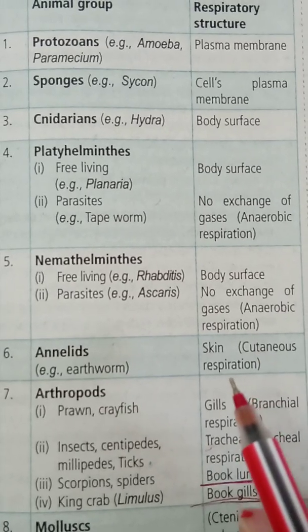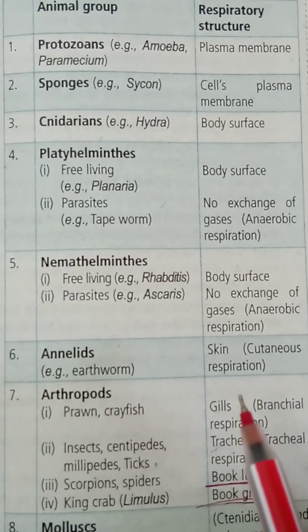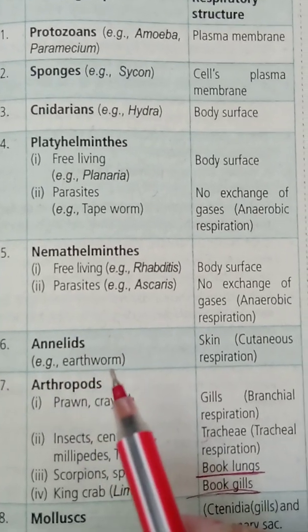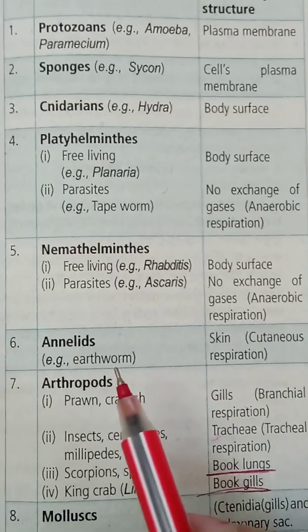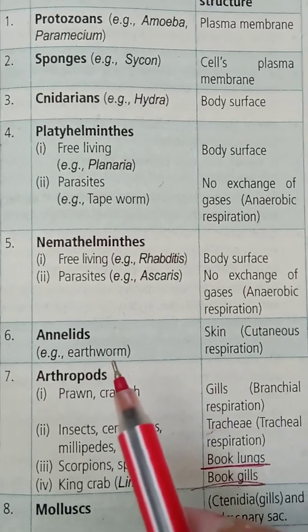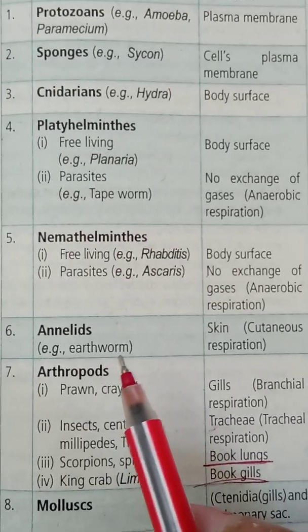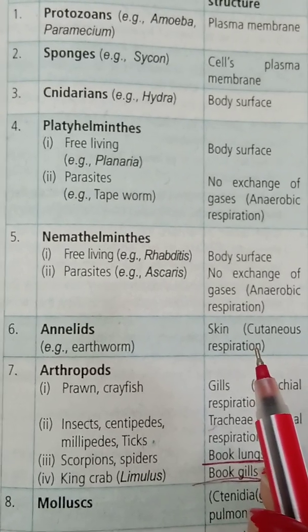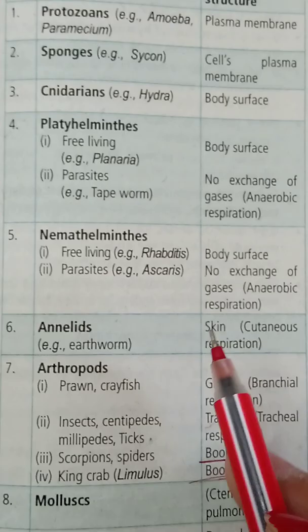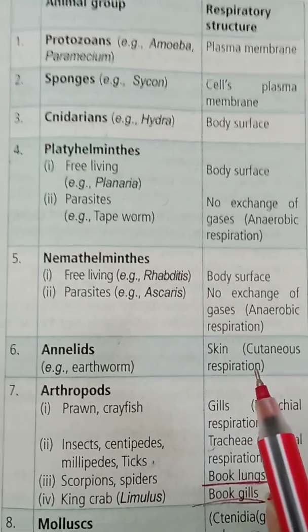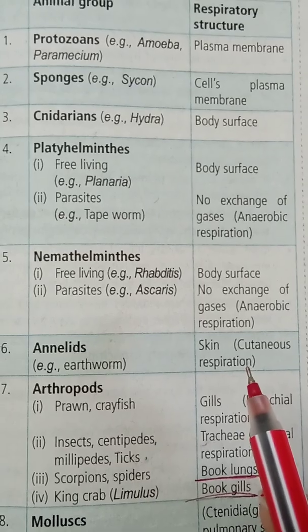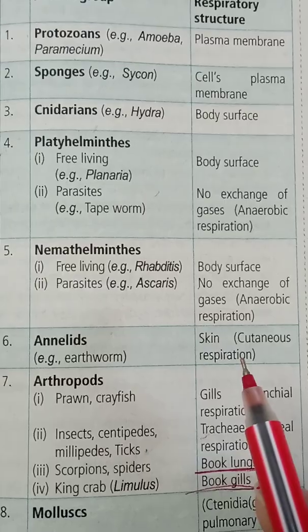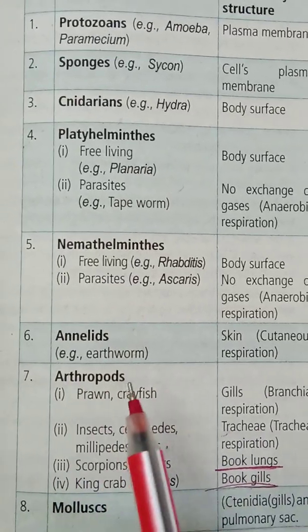In cutaneous respiration, the skin acts as a suitable organ for the exchange of gases. The skin is very thin in nature, kept moist, permeable, and very vascular. It can function in both water and land conditions. Cutaneous respiration takes place in Annelids, some crustaceans, and some amphibians.